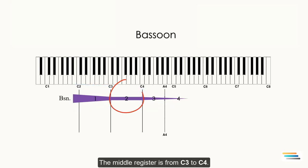The middle register is from C3 to C4. The number two indicates the middle register. Here the tones are smoother and the intensity of the tones are less than the lower register. This is a very soft register of the bassoon.